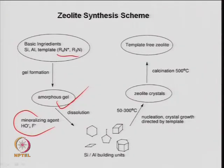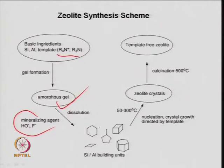Depending on the gel type, dissolution takes place and you get different kinds of silicon to aluminum building blocks - different 6-member, 5-member, 4-member rings. The control is very crucial at this stage and depends on several parameters: water content, raw material, templating agent, OH radicals, temperature, and time. Based on this structure building, and depending again on temperature between 50 and 300 degrees centigrade, nucleation takes place.